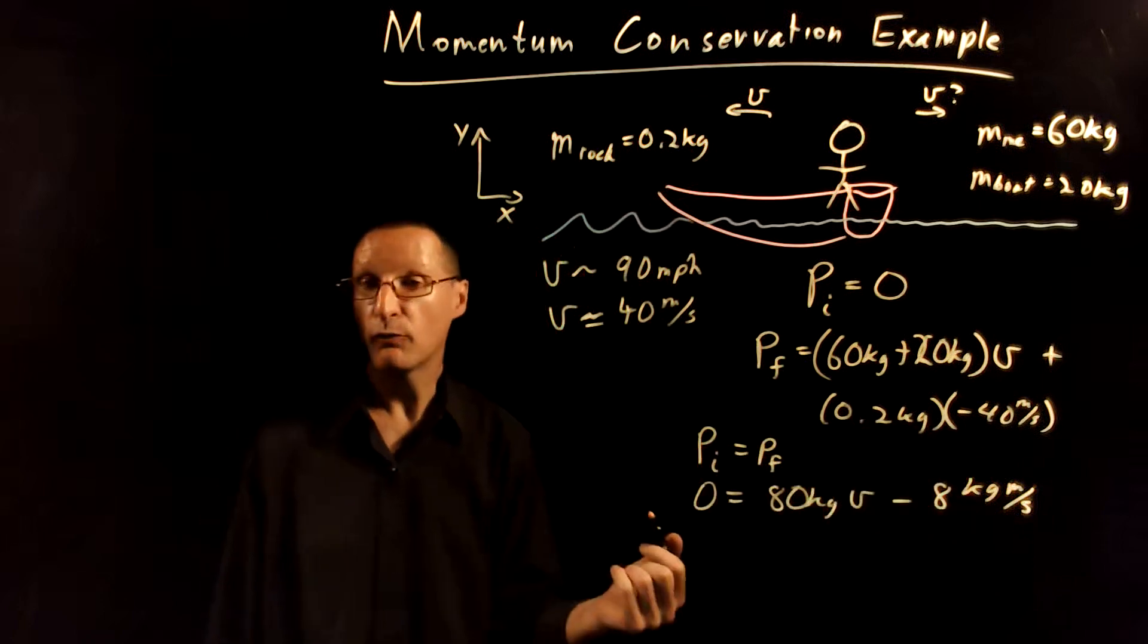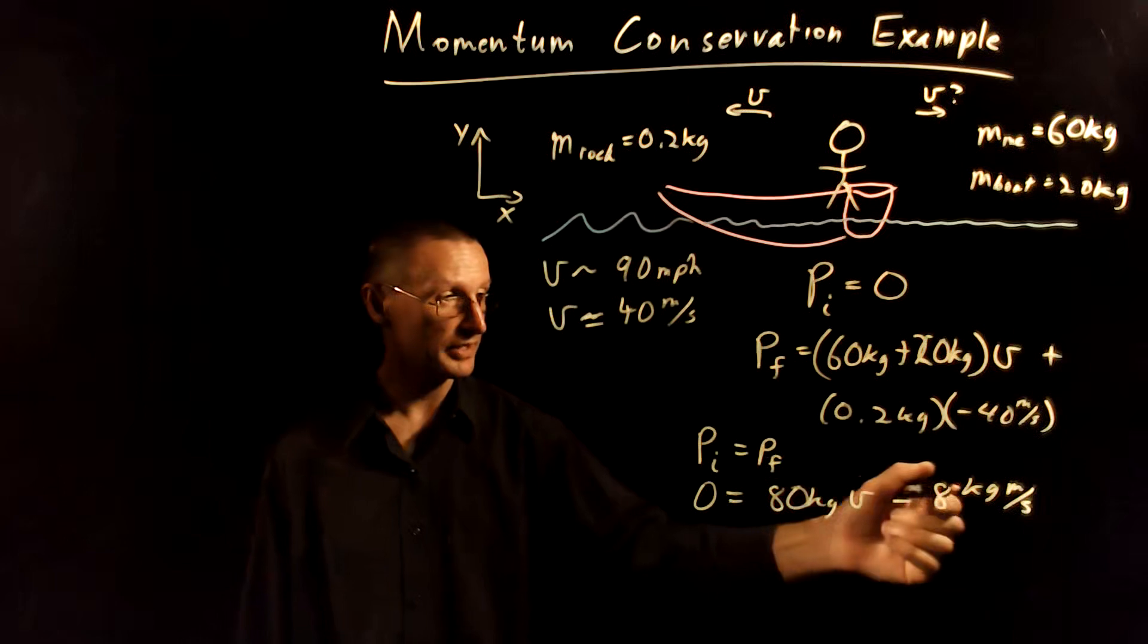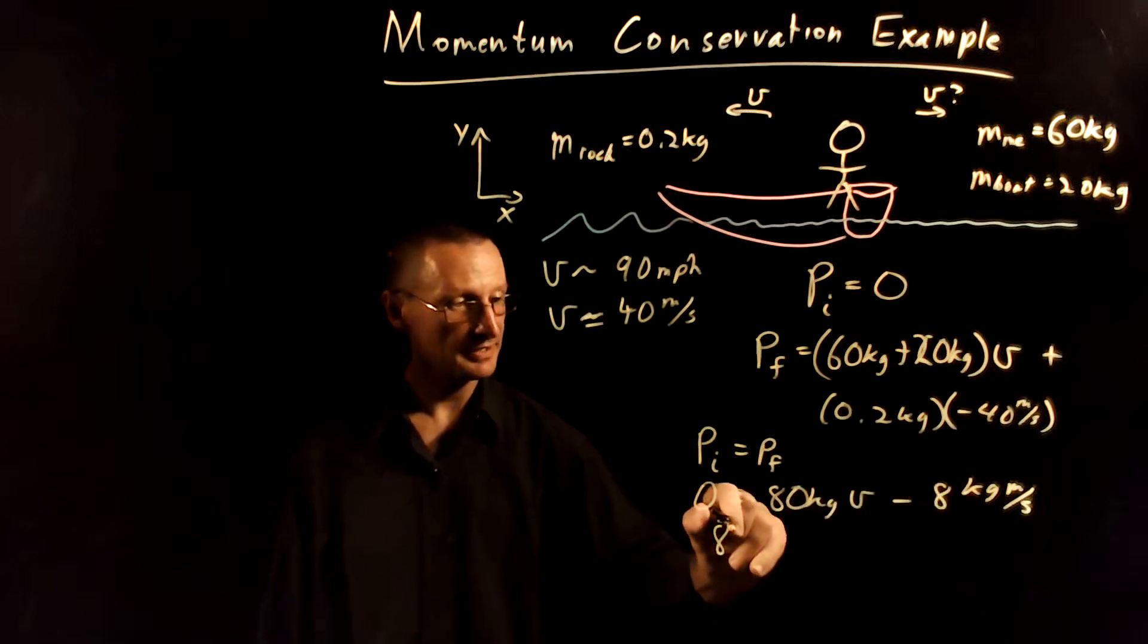So we have here one equation, one unknown; we can easily solve that. So I'm going to move this to the other side and I get 8 kilogram meters per second.